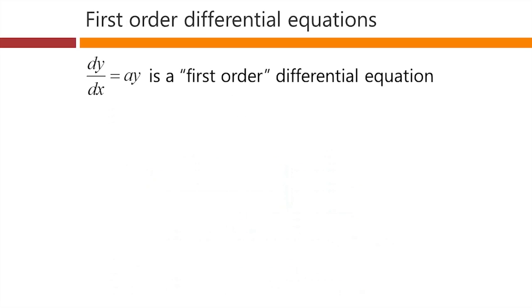That particular equation is an example of what we call a first-order differential equation. That means there are no derivatives here in this equation that are higher than first-order. We only have a first-order derivative here. There's no second-order derivative or anything higher than that.